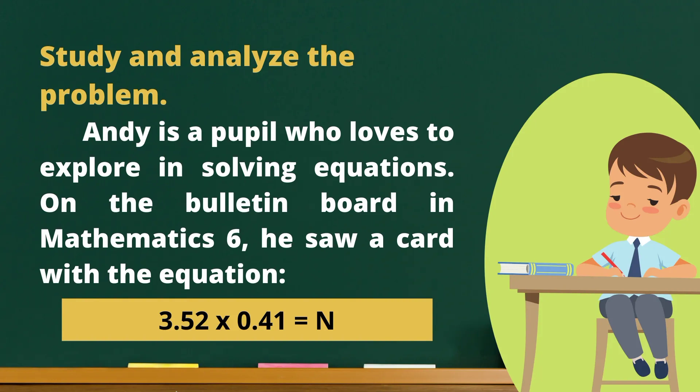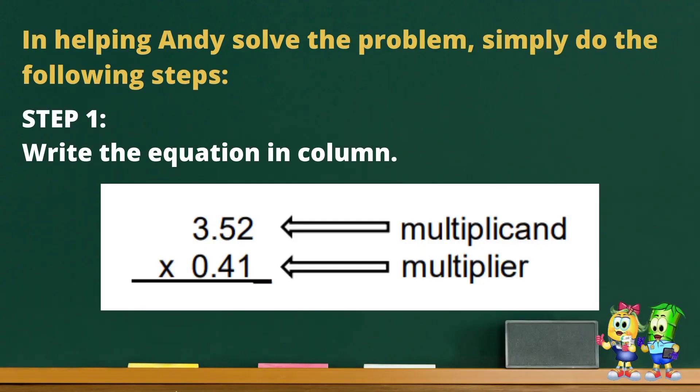This time, let us study and analyze the problem. Andy is a pupil who loves to explore in solving equations. On the bulletin board in Mathematics 6, he saw a card with the equation three and fifty-two hundredths times forty-one hundredths equals N. Can you help Andy to solve this? In helping Andy solve the problem, simply do the following steps. Step one, write the equation in column. Three and fifty-two hundredths is the multiplicand and forty-one hundredths is the multiplier.